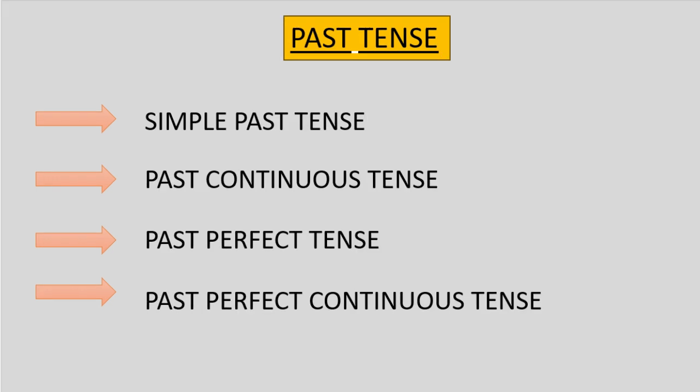Past tense is divided into four types: 1. Simple past tense. 2. Past continuous tense. 3. Past perfect tense. 4. Past perfect continuous tense.